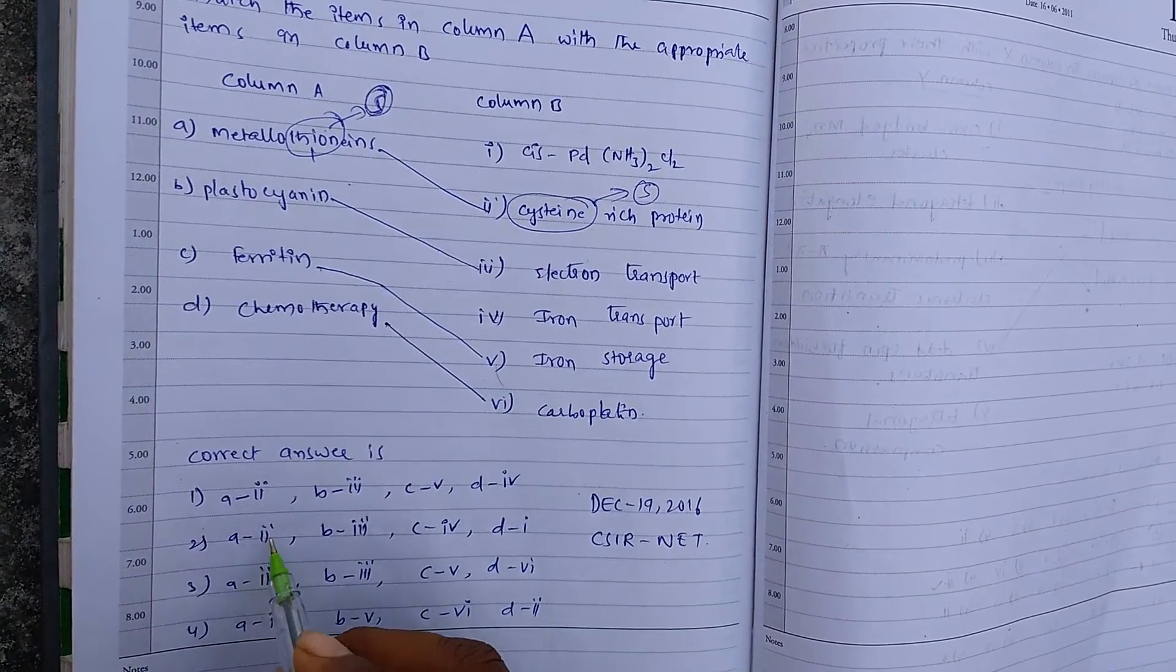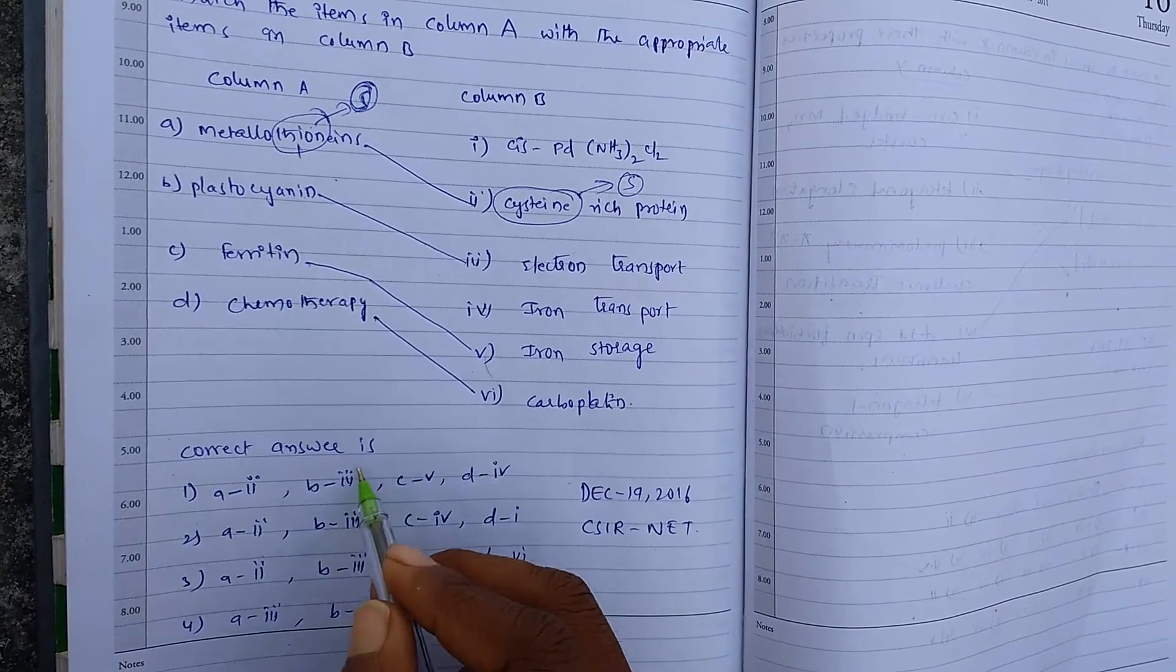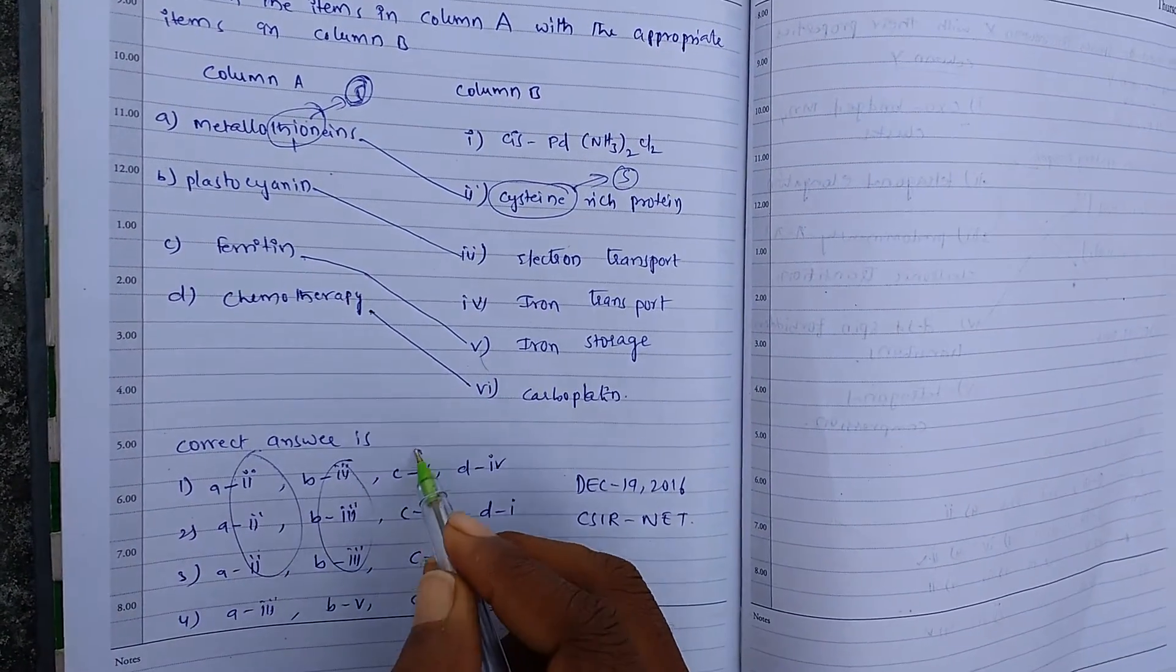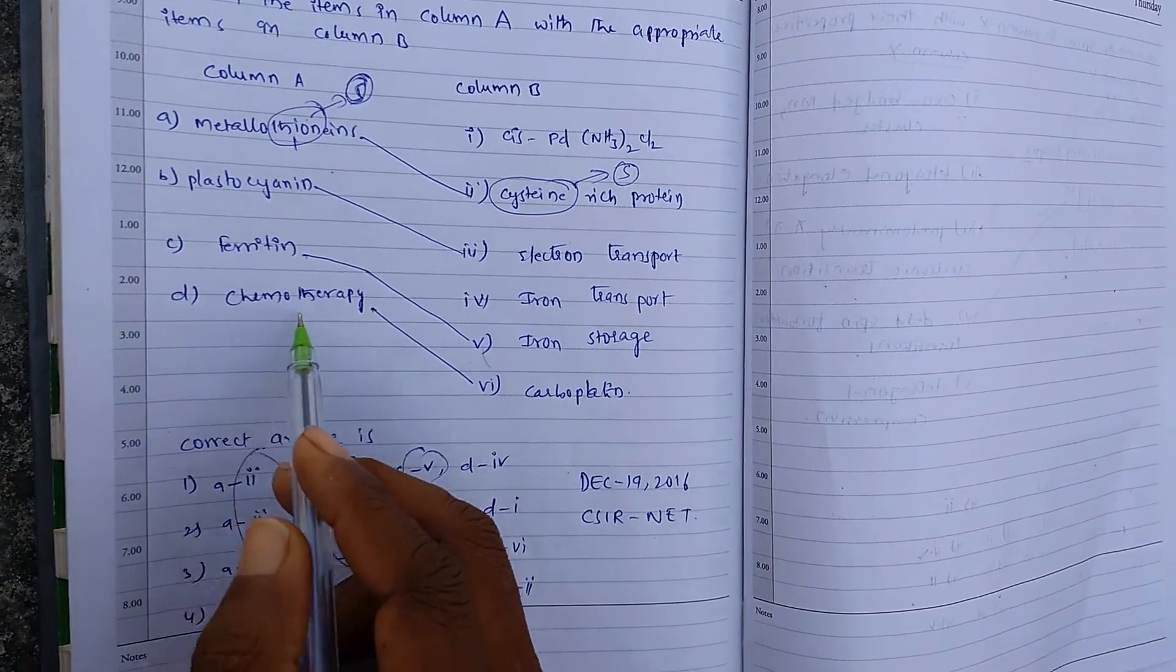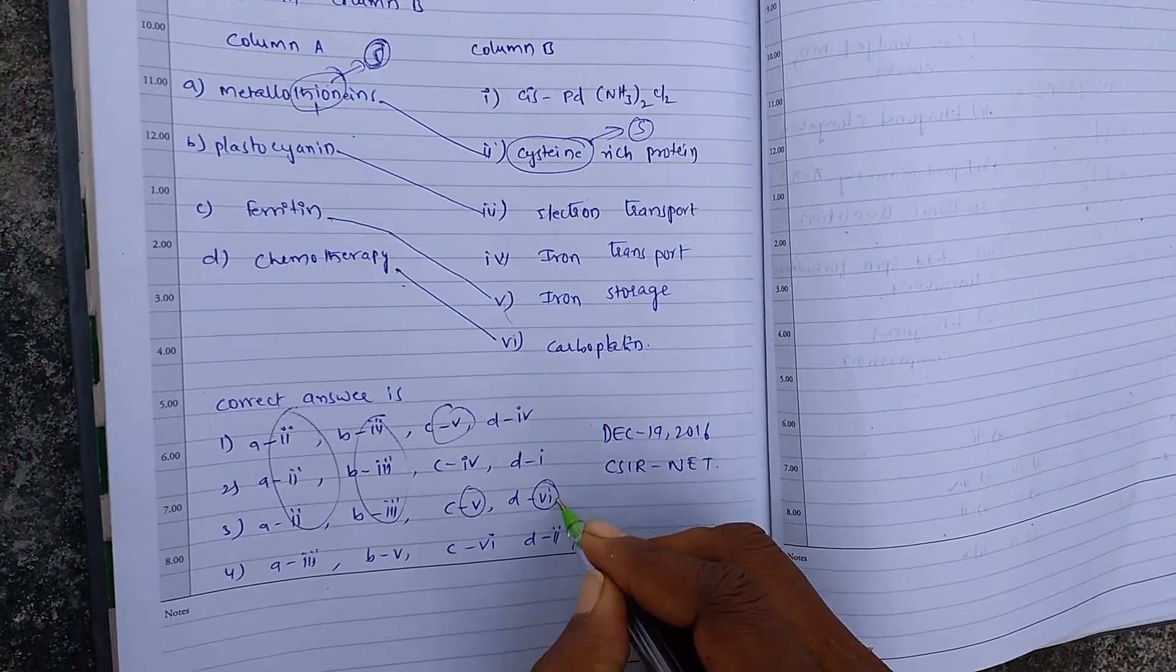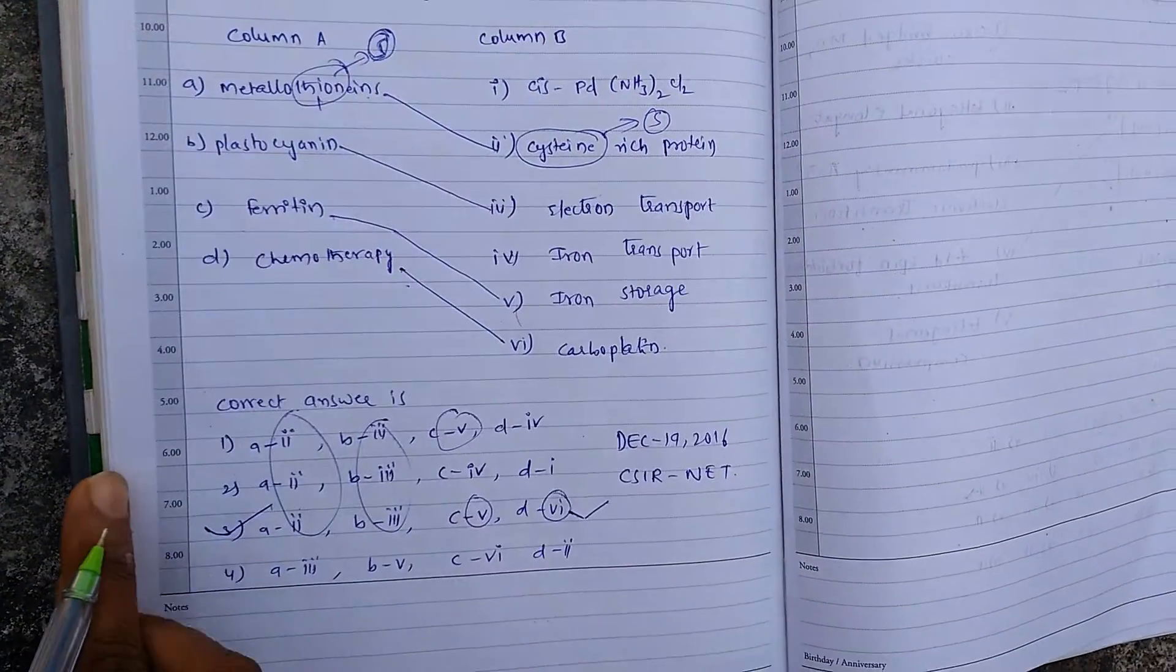So option A is 2. And plastocyanin is 3. And ferritin is 5. And chemotherapy is 6. So answer is third option. Third option is correct. Thank you.